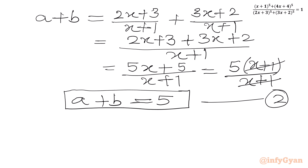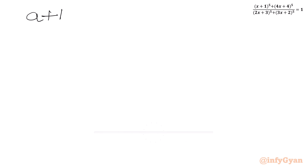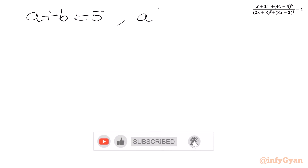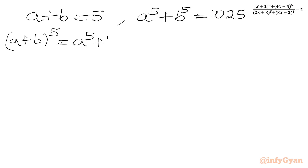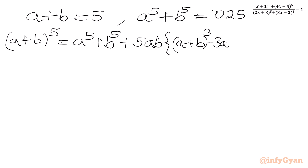Now I will use binomial expansion. We have a plus b is 5 and a^5 plus b^5 is 1025. I will write (a+b)^5 equal to a^5 plus b^5 plus 5ab times (a^3 plus b^3), which we can write as (a+b)^3 minus 3ab(a+b), then 10 times a^2 b^2 times (a+b).